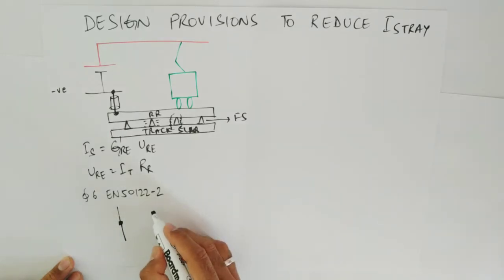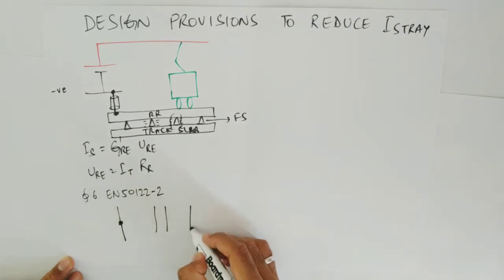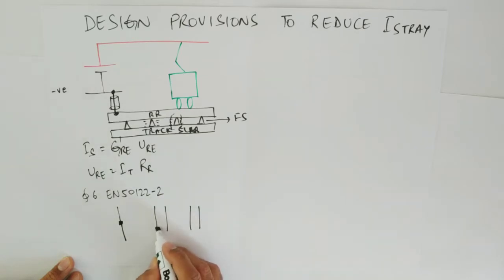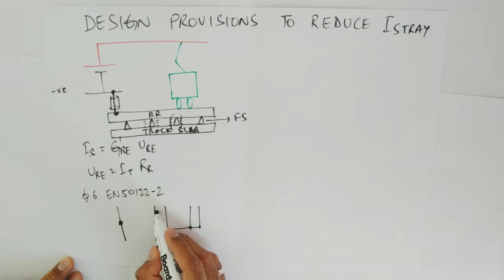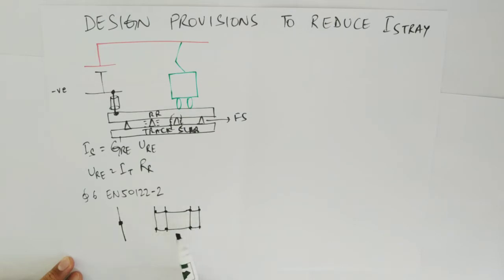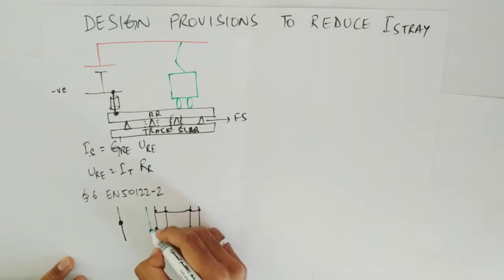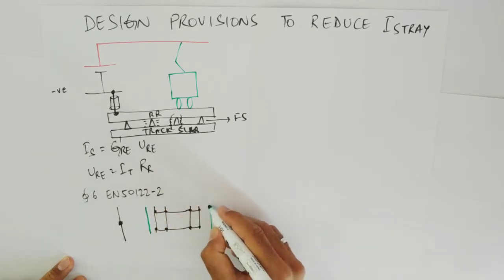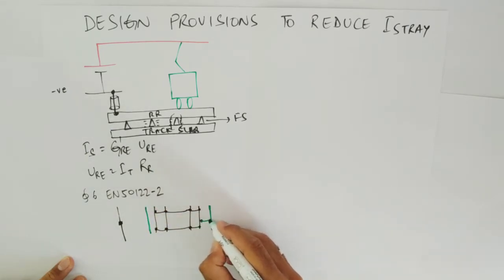Apart from this, suppose this is your up track and this is your down track. We provide cross bonds — that is between track to track and rail to rail. These cross bonds reduce the effective resistance by making the running rails parallel. Even after this, if we are not able to achieve the required values, we provide an extra conductor known as the return conductor, which is connected to these running rails.